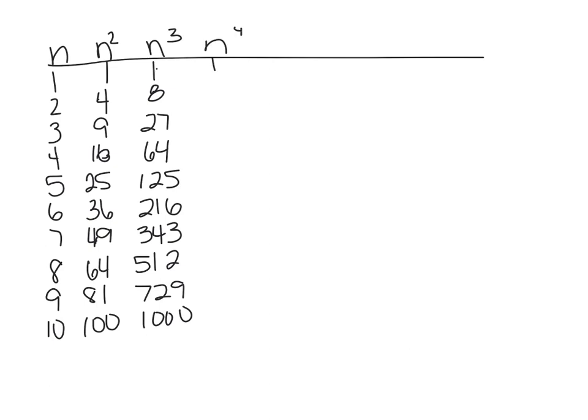And to the fourth: 1, 16, 81, 256, 625, 1296, 7 to the 4th is 2401, 8 to the 4th is 4096, 9 to the 4th is 6561, and 10,000.